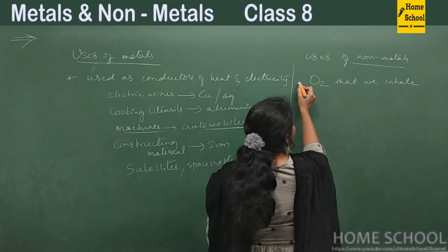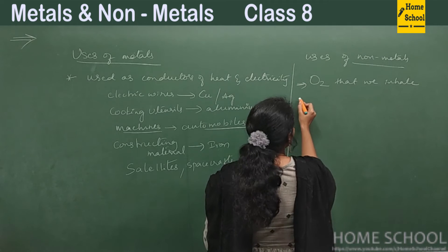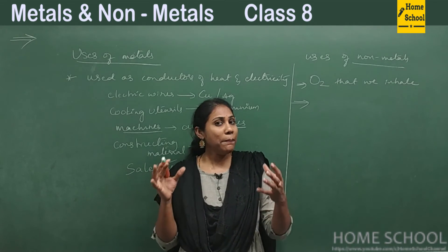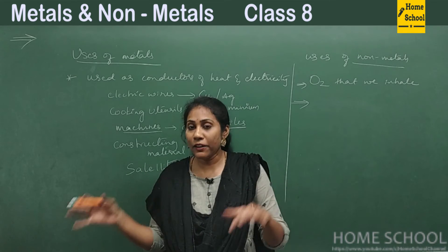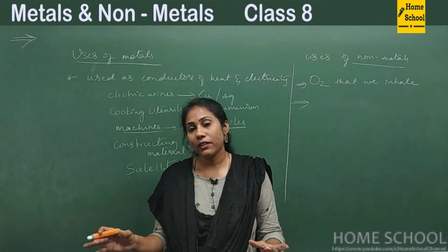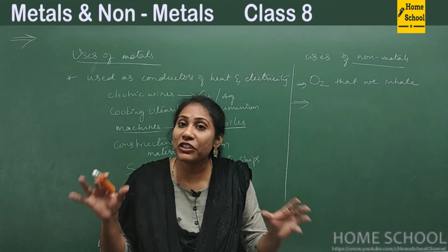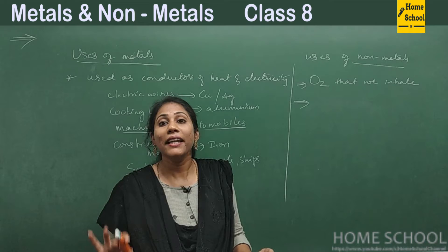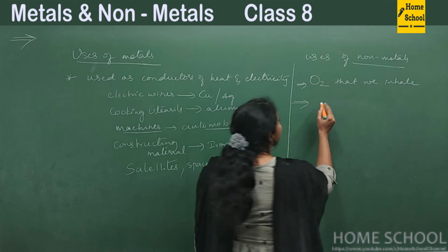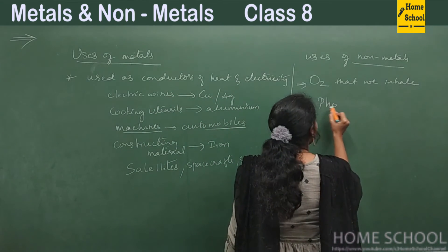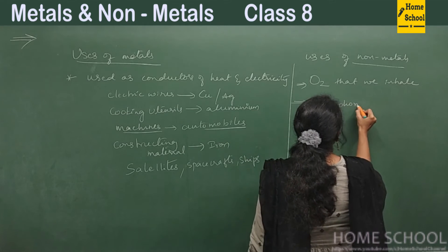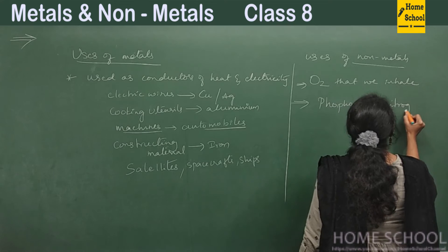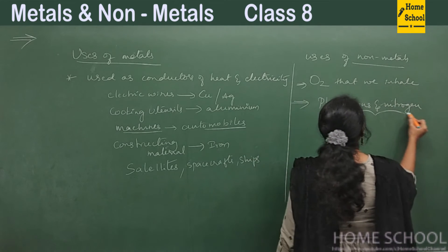And also, you know if a plant has to grow properly, we supply fertilizers. Fertilizers have non-metals like phosphorus and nitrogen. Plants need phosphorus and nitrogen for their growth. So phosphorus and nitrogen—what are they? Both are non-metals.